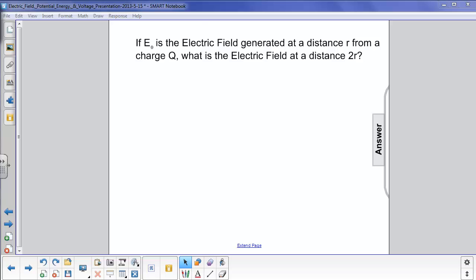If E0 is the electric field generated at a distance r from a charge q, what is the electric field at a distance 2r?